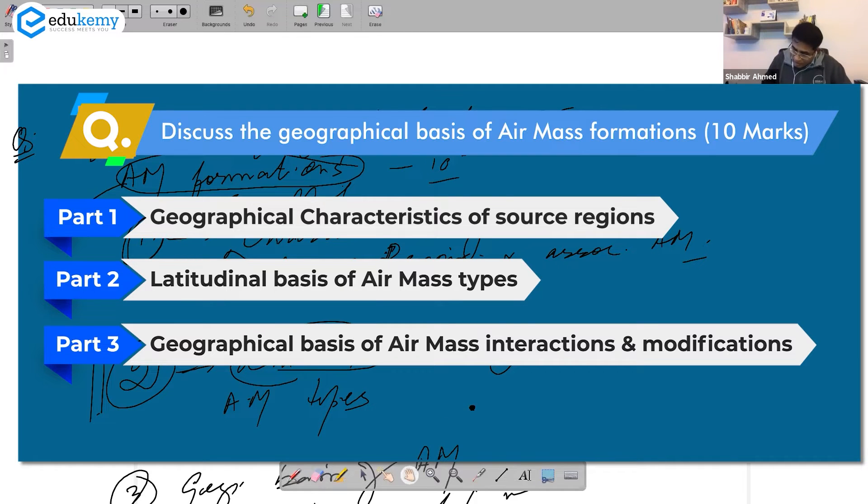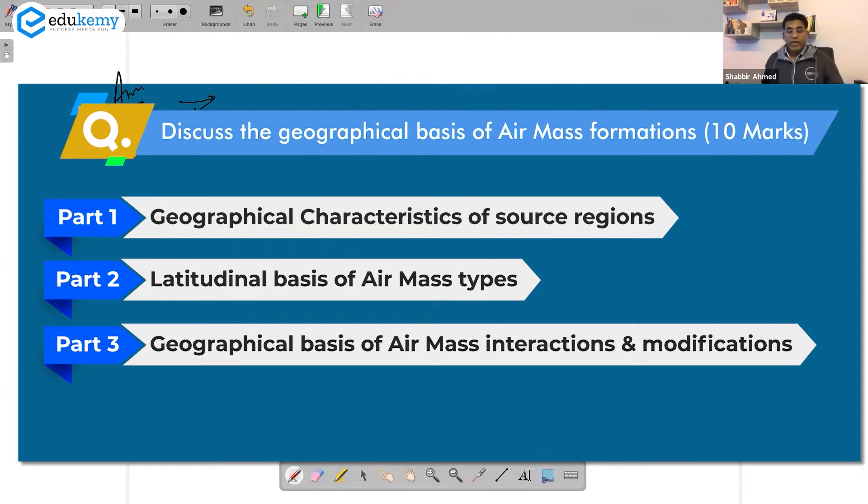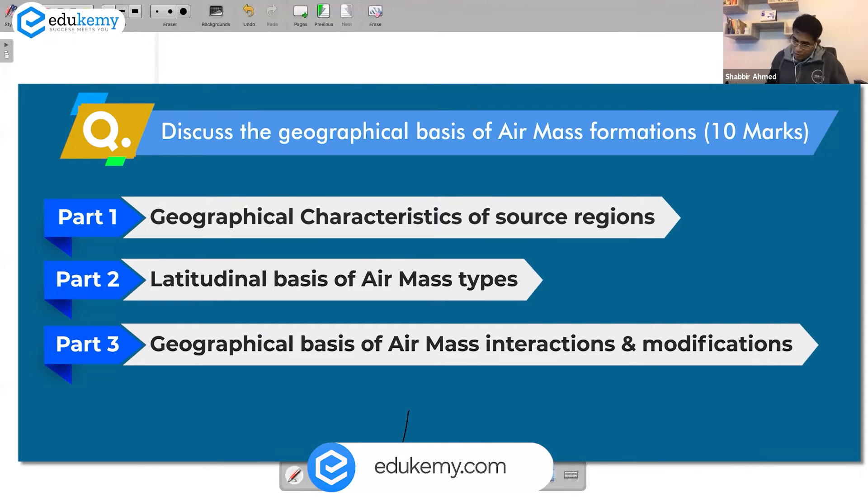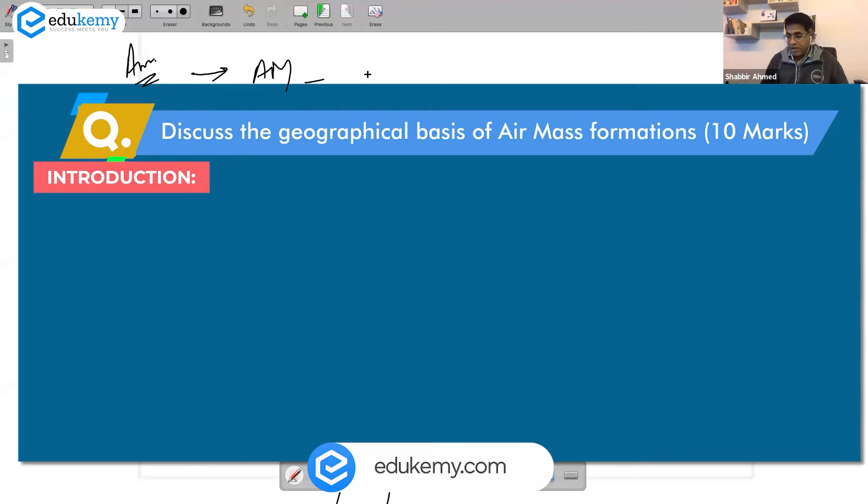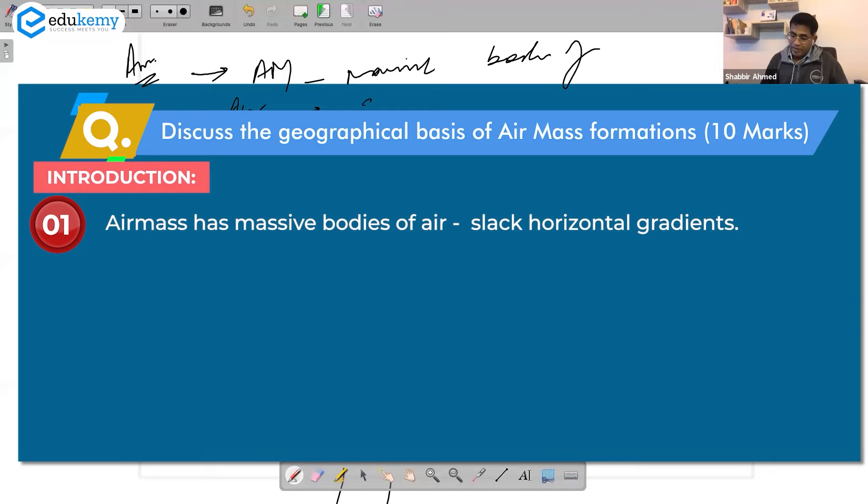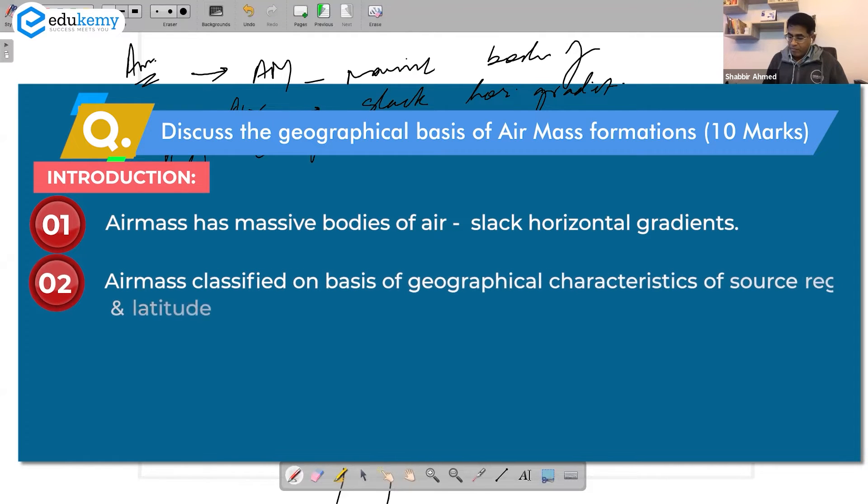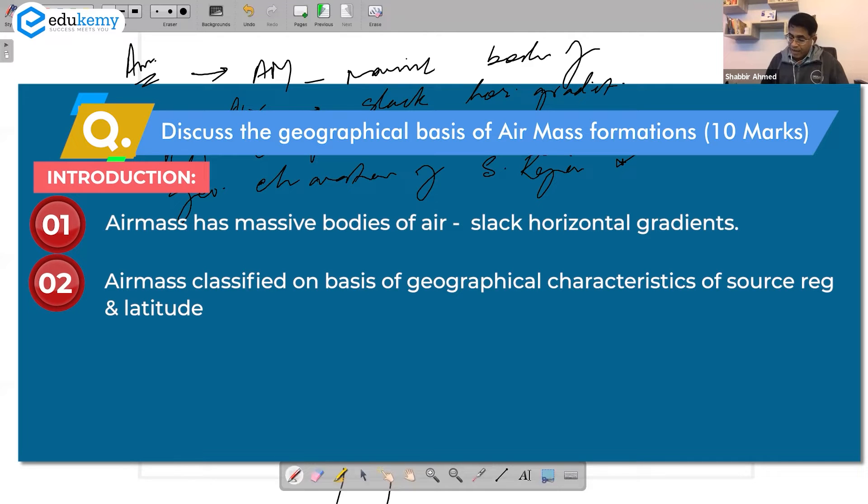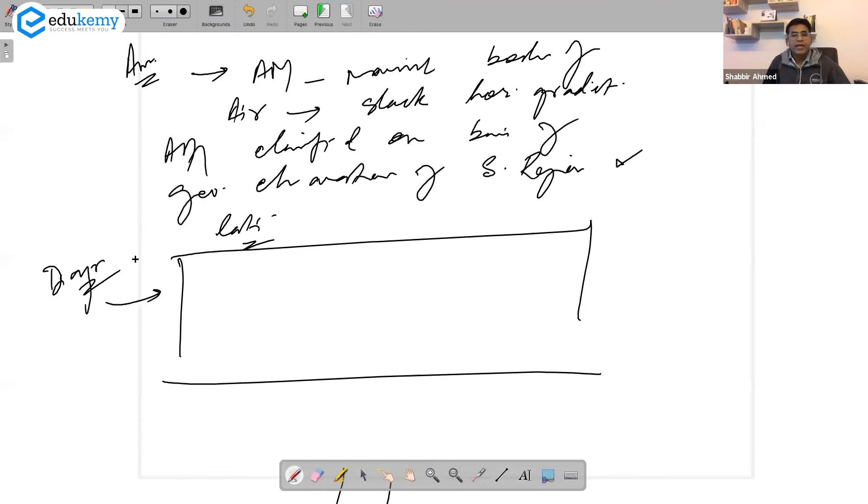How do you want to start this answer? So introduction, you can start with air masses as massive bodies of air with a slack horizontal gradient. Air masses classified on the basis of geographical characteristics of source regions and latitudes. Keep it straight.